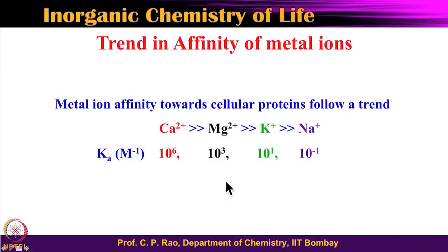Welcome to the next class on the Inorganic Chemistry of Life: Principles and Perspectives. Let us have a recap of what we were doing in the last class. I was explaining the metal ion binding affinity of alkali ions towards cellular proteins. We have seen calcium 2+ binds much more strongly than magnesium 2+, which binds stronger than potassium+, which is in turn greater than sodium+.